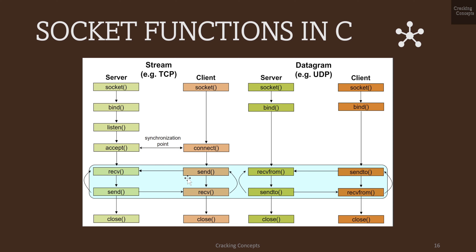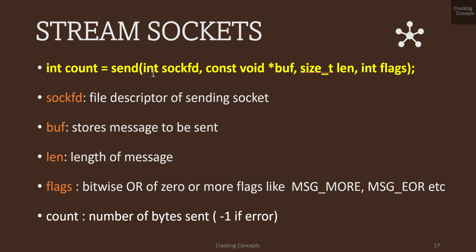Now we'll look at the functions used for sending and receiving data on the TCP side. The send function takes the arguments: file descriptor, buffer where data to be sent is stored, length of the data, and flags. Flags can be OR of 0 or more options — MSG_MORE indicates the caller has more data to send, and MSG_EOR is used for terminating a record. The return value, count, contains the number of bytes sent; on error it returns minus 1.